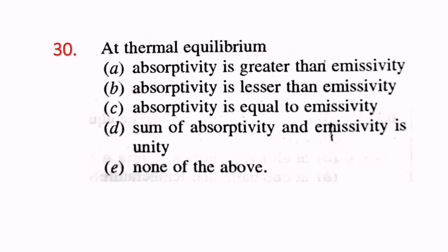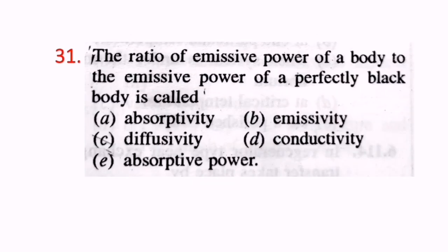Question 30: At thermal equilibrium, absorptivity is equal to emissivity. C is the correct answer. Equilibrium means there is no change or variation of properties. Question 31: The ratio of the emissive power of a body to the emissive power of a perfectly black body is called emissivity. B is the correct answer.